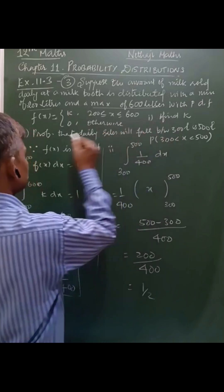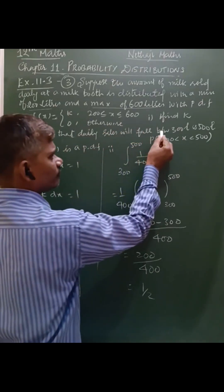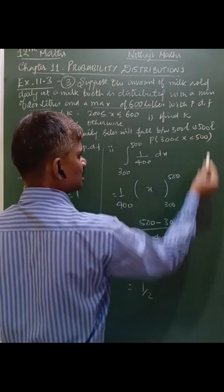So, 200 and 600 define the range. You have to find the value of k. Then, second one, probability that daily sales will fall between 300 litres and 500 litres.